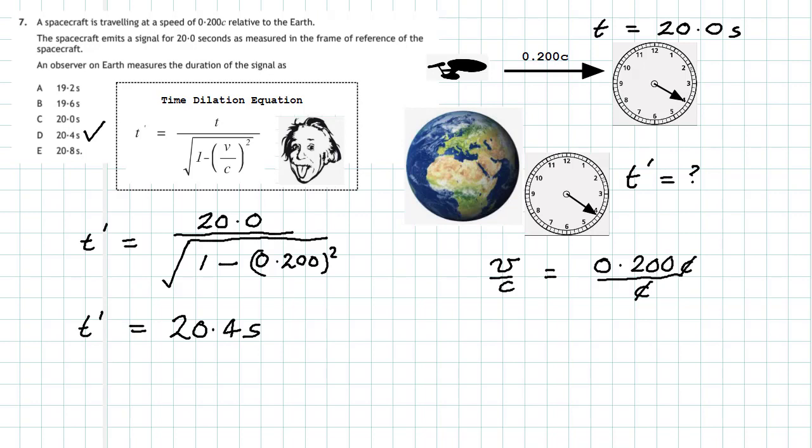What we've got to learn from that: we must be able to use the time dilation equation. We must know what t' is—that's the time which we measure on Earth. And t is going to be the time from the spacecraft's frame of reference. So that's the time dilation equation in action.